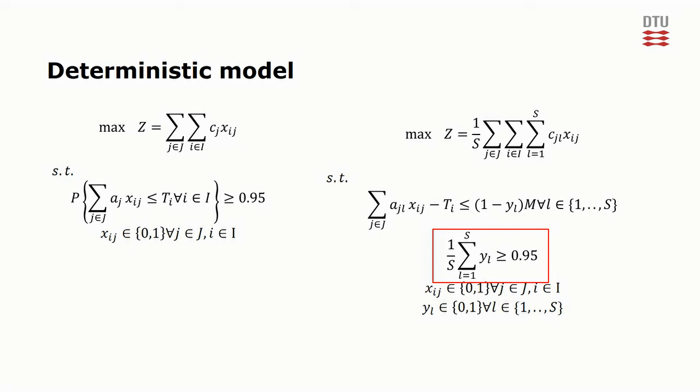Finally, notice that we had to add a new l-index on the sampled parameters, and in the objective function, we decided to simply use the mean value of the sampled c's, which is a typical way of handling stochastic objective parameters.